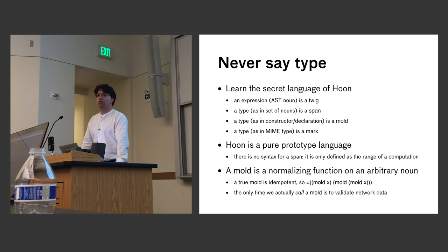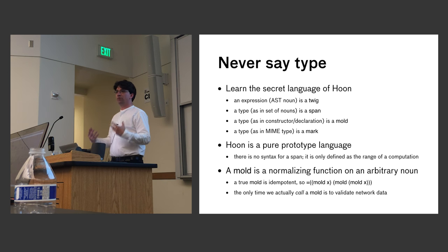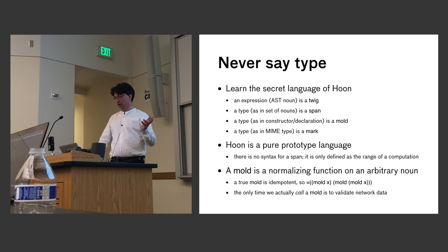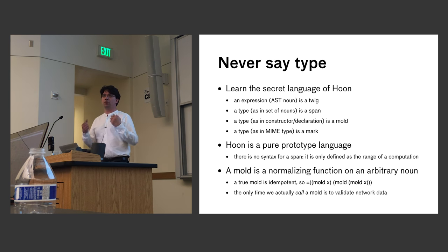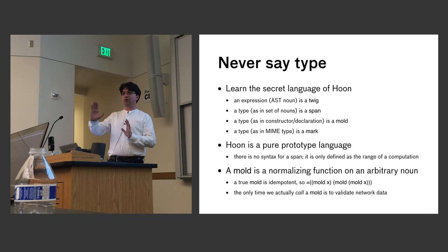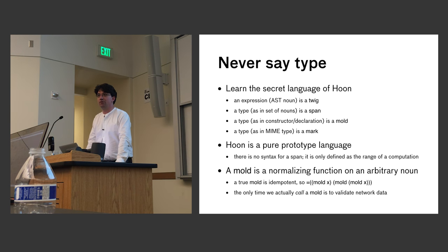Hoon, since it has its own way of doing things, invents a lot of terms. An expression or AST is a twig. A type has three corresponding things: a span is a set of nouns with semantics ascribed to them; a type in terms of a constructor is called a mold; and at the OS level there's also the equivalent of MIME types. Hoon is a pure prototype language — there's no syntax for defining a span directly; the only thing you can define are twigs.